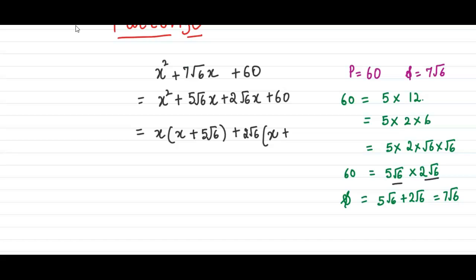So when we divide 60, see notice, 60 divided by 2 under root 6 is 5 under root 6. So we get 5 under root 6 over here.